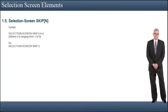To place blank lines on the selection screen, we use SELECTION-SCREEN SKIP n. This statement generates n blank lines, where n can have a value between 1 and 9.